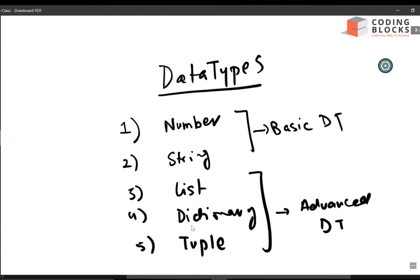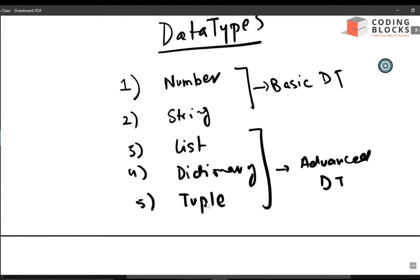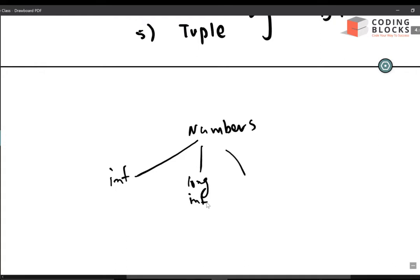In this video I will cover numbers and strings. Numbers in Python can be of four types: integers, long integers, floating point numbers, and complex numbers.